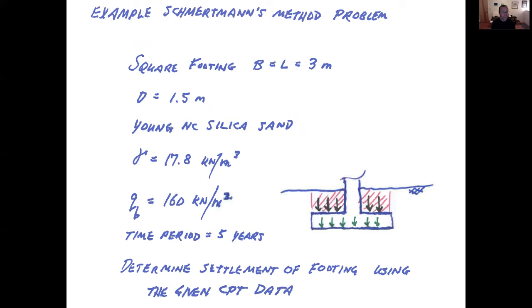We'll look at a square footing. So B equals L equals 3 meters. The depth of embedment 1.5 meter. We have a young normally consolidated silica sand simply presented so you can go back to the correlations in this regard. A gamma of the soil 17.8 kilonewton per cubic meter. Q sub B is 160 kilonewton per meter squared. And note that the QB includes all of this. It includes the column load spread out over that foundation. It includes the weight of the foundation itself and it includes this backfill shaded in red here in this zone. So it's all three components built into that 160 kPa. The time period, I'll look at a rather short time period here, five years. Most certainly you could look at longer periods for most structures. And we'll determine the settlement of the footing using the given CPT data.